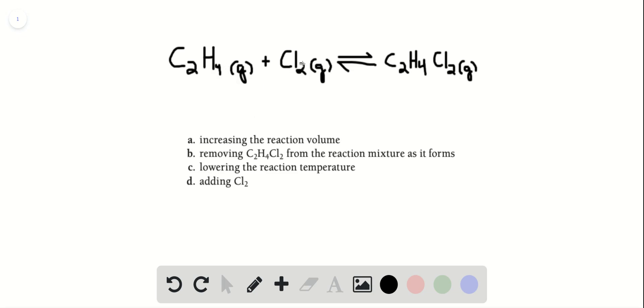In this equation, the reactant side or left side has two moles of gas, one mole of C2H4 and one mole of Cl2, while the product side only has one mole of C2H4Cl2. So increase in the volume would shift this reaction to the left because there's more moles of gas over here. So that would not get us more C2H4Cl2 like the question wanted. So A will not get us there.